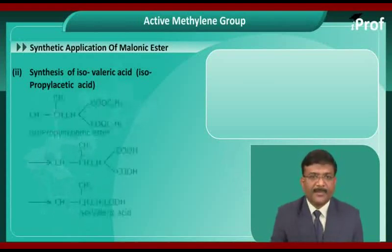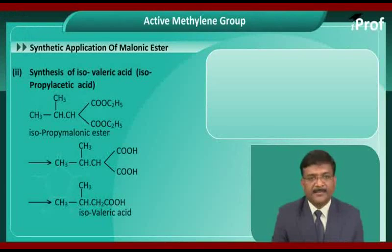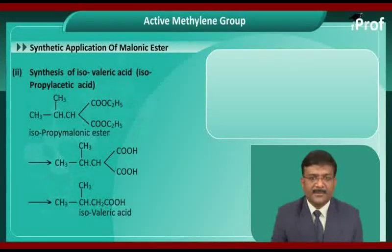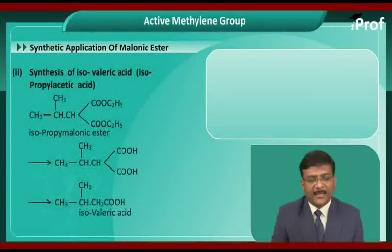Next, synthesis of isovaleric acid or isopropylacetic acid. Isopropyl malonic ester, when heated, gives a dicarboxylic acid, which on further heating gives isovaleric acid.